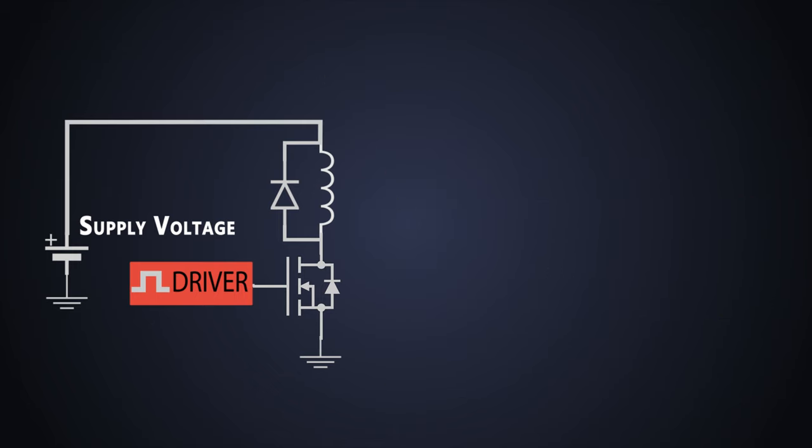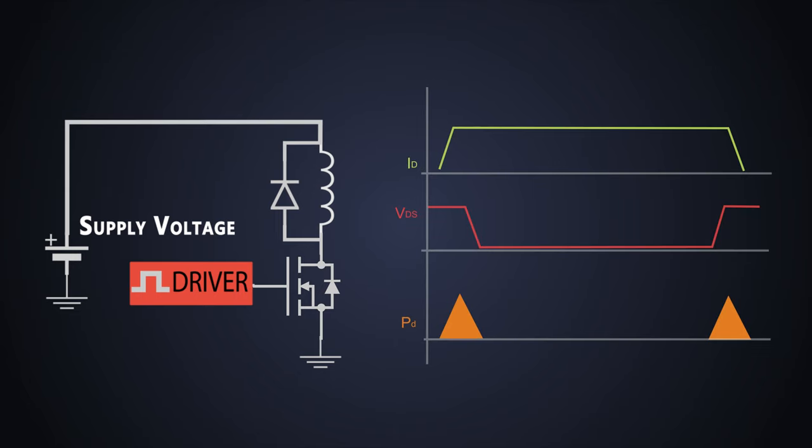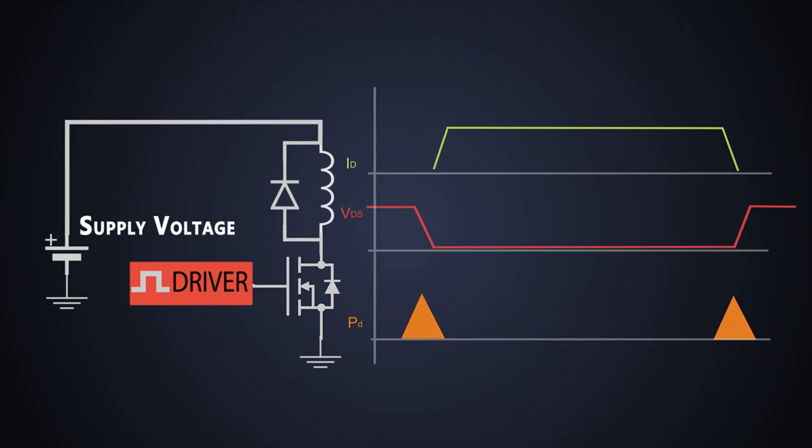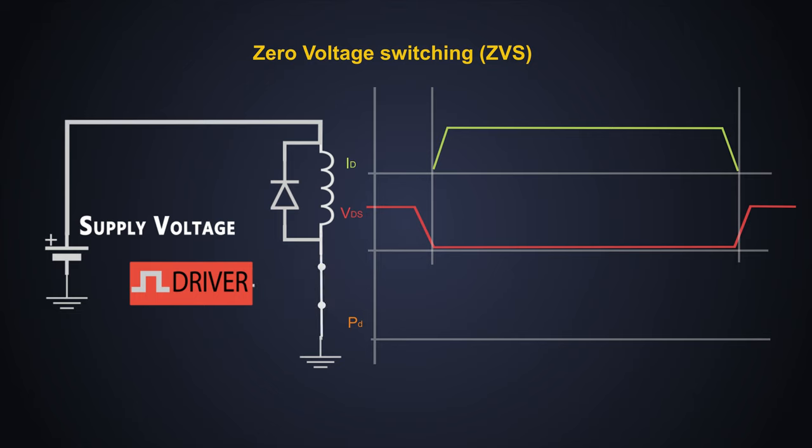Let's say this drain current and drain to source voltage of this MOSFET. If we somehow shift this voltage so that it doesn't overlap with the current or there would be minimum overlap, this way there will be very negligible power dissipation. This technique is called zero voltage switching. In this, the switching happens when the drain to source voltage of the MOSFET crosses zero during the turn on process and after that the drain current starts increasing.